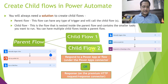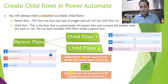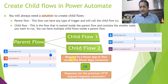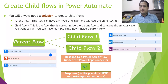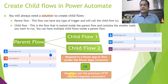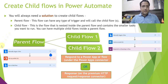Some people think child flows cannot be created because it's a premium feature — that is not correct, it is not a premium feature. In the child flow there are two actions you can use to respond back to the parent flow: either 'Respond to a Power App or flow', which is a standard feature, or you can use the 'Response' action which is a premium HTTP request/response connector.